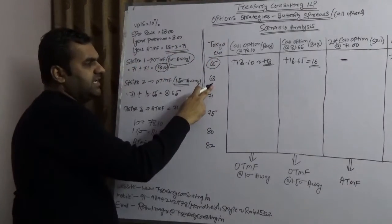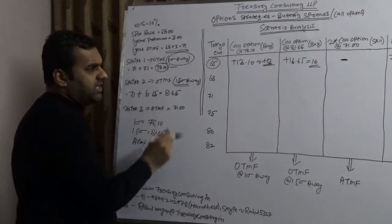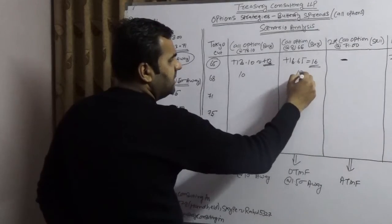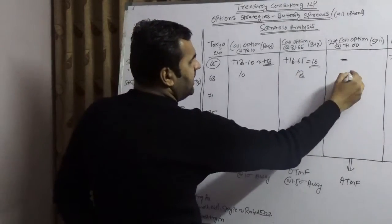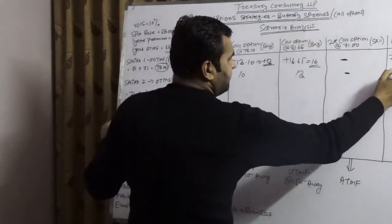In case of 68, same thing would happen but it would decrease. Here it would decrease, here it would be 10 rupees, here it would be 13 rupees, and here again it would be worthless. So you would have a gain of 23 rupees net.